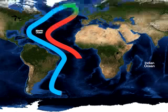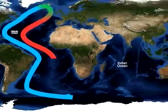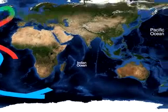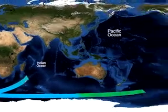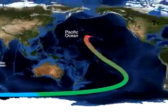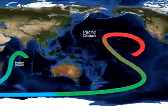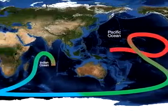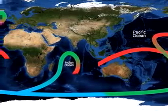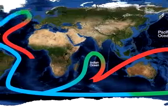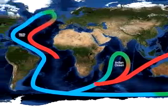This deep water is pushed out into the Indian and Pacific oceans, where fresh rainwater dilutes the warming water as it rises. Winds and the Earth's rotation push the water back into the Atlantic where it began.